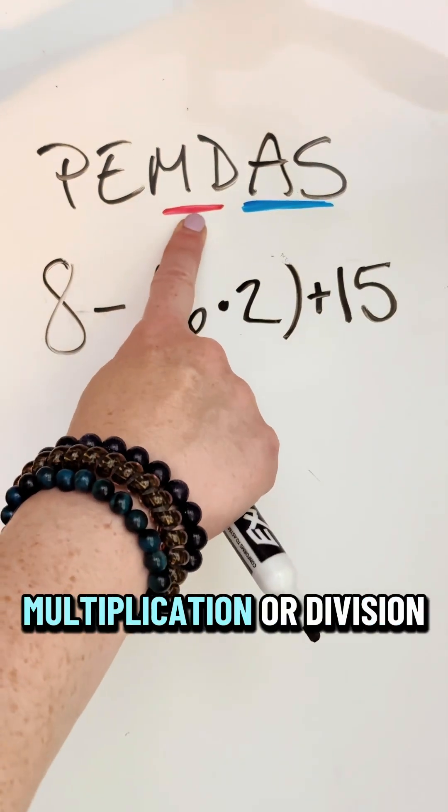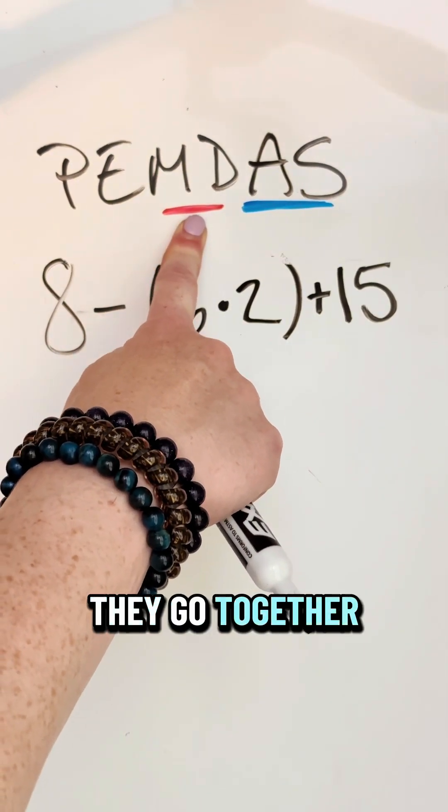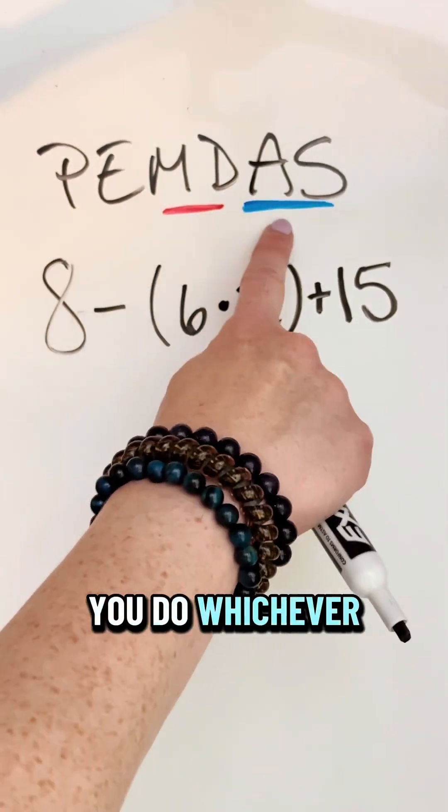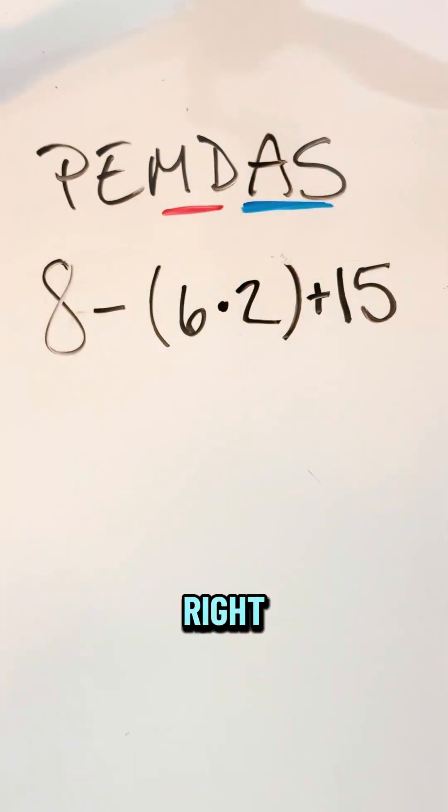Parentheses, exponents, multiplication or division. Notice they're underlined in red, they go together. Addition or subtraction. Again, underlined, they go together. These guys, you do whichever one comes first when you move from left to right, just like you're reading.